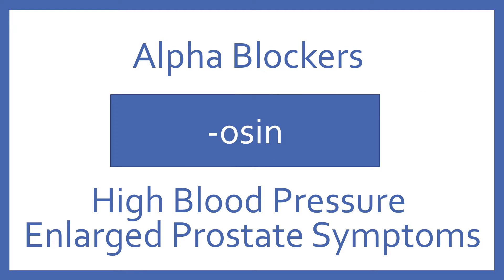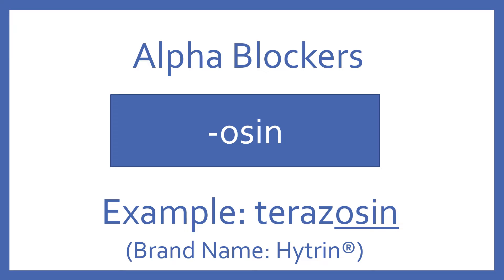Alpha blockers end in the suffix -osin. Alpha blockers are for high blood pressure and enlarged prostate symptoms. An example of an alpha blocker is terazosin, and its brand name is Hytrin.